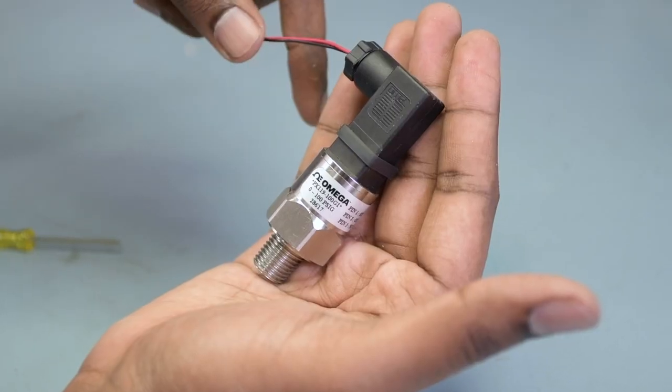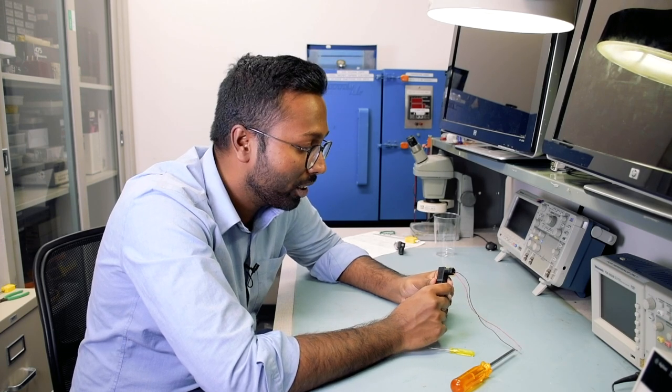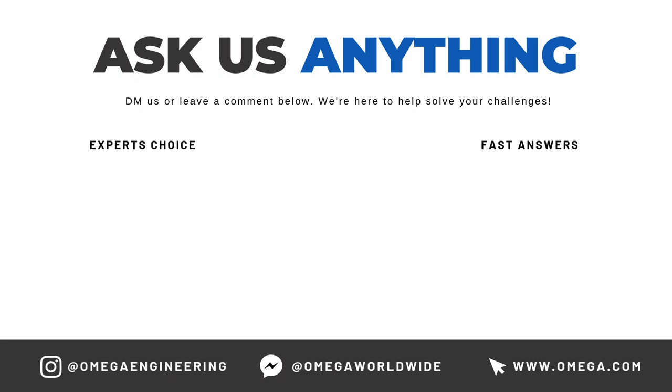There we have it, folks. We have successfully wired a DIN style pressure transducer with two wires—red and black—one connected to positive supply and one connected to positive output. As always, if you have more questions, comment below or feel free to contact us.